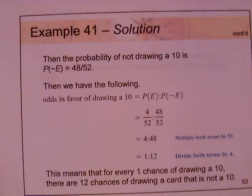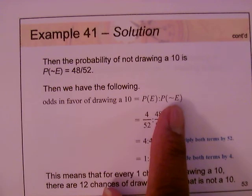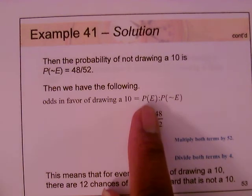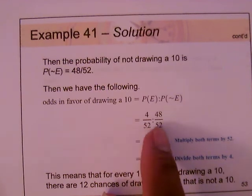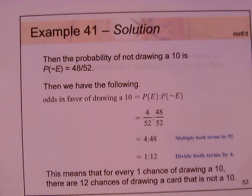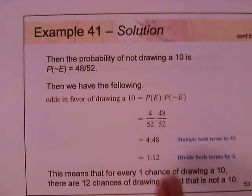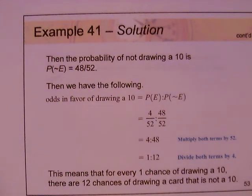The odds in favor of drawing a 10 is the ratio of P(drawing a 10) to P(not drawing a 10): 4 over 52 to 48 over 52. Since both terms have 52 in the denominator, we multiply both by 52 to get 4 to 48. Dividing both by 4 gives 1 to 12, meaning for every one chance of drawing a 10, there are 12 chances of drawing a card that is not a 10.